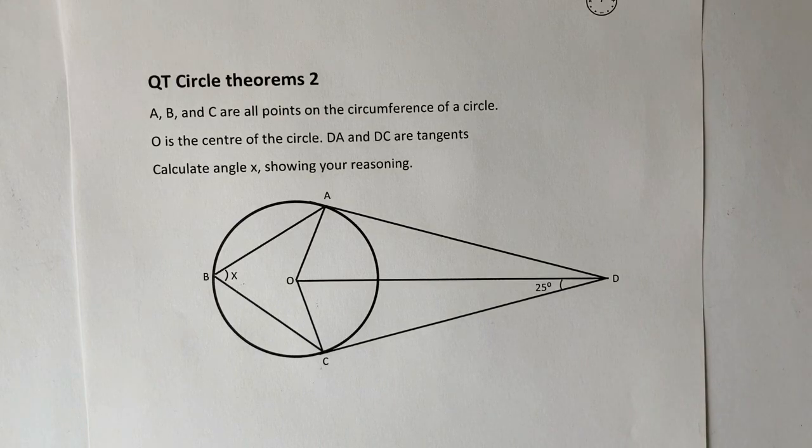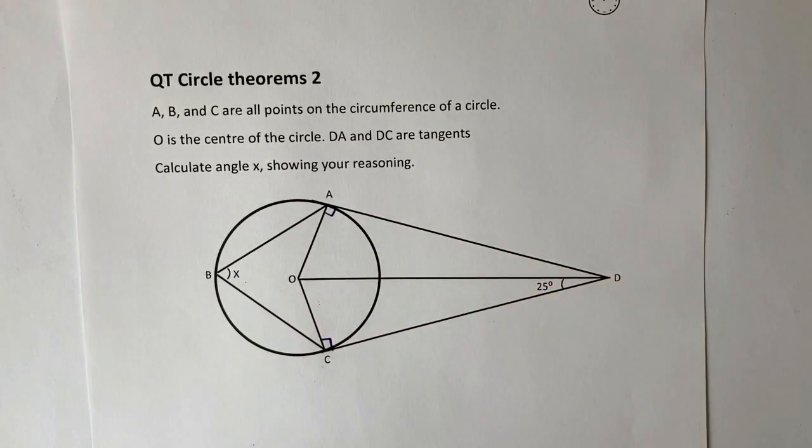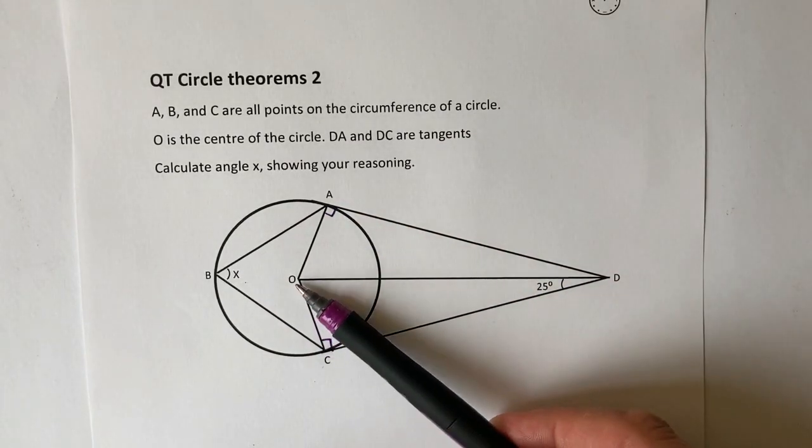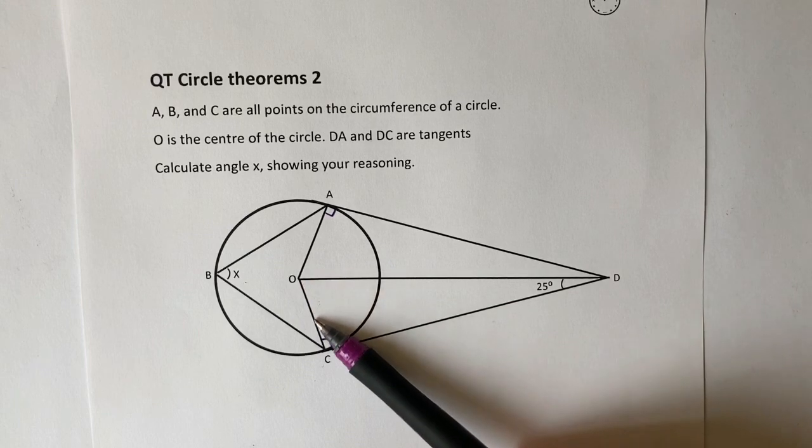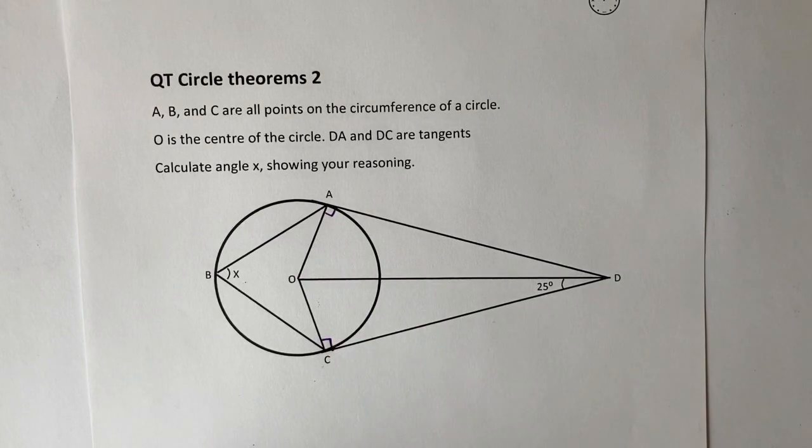Well if they are tangents then they meet the radius of the circle at 90 degrees, and we're told because this is the center then this line here must be the radius, this is the tangent it must meet at 90 degrees.